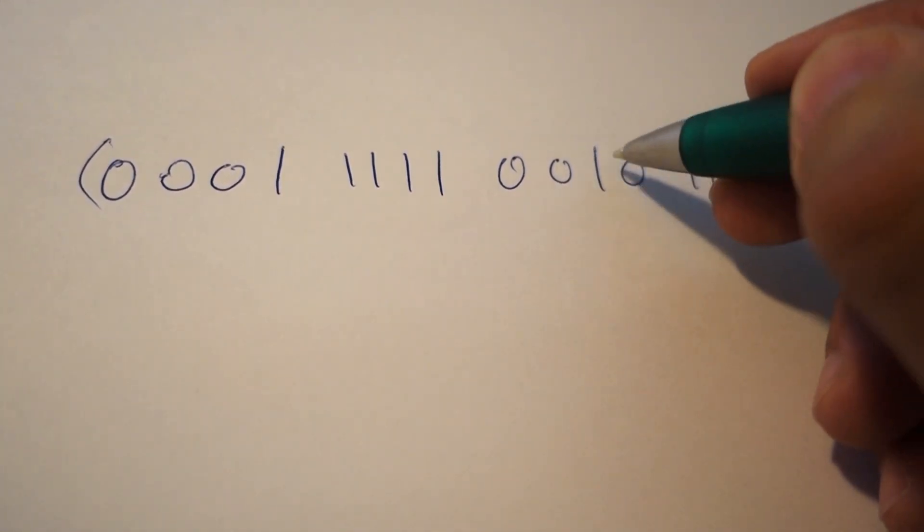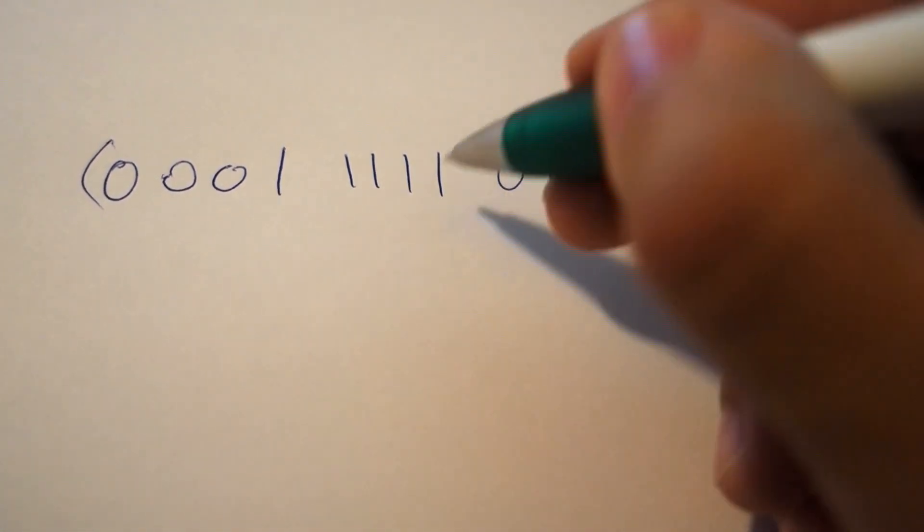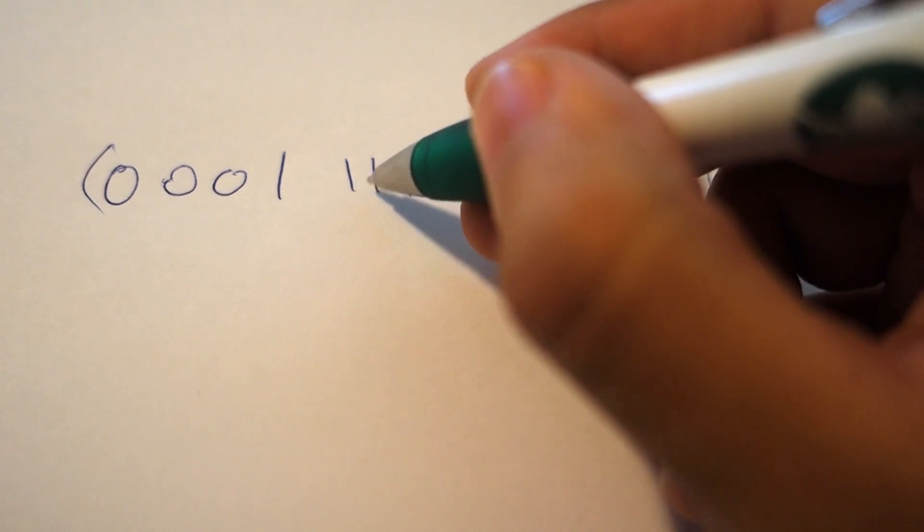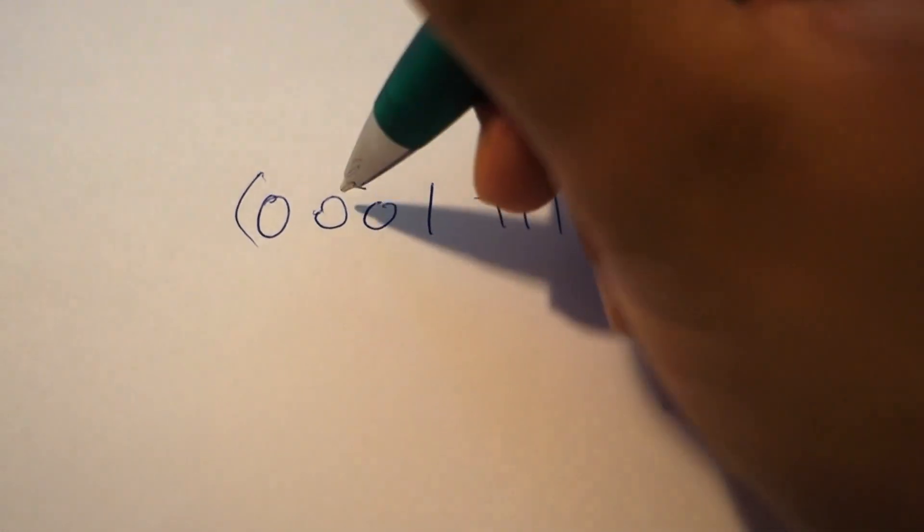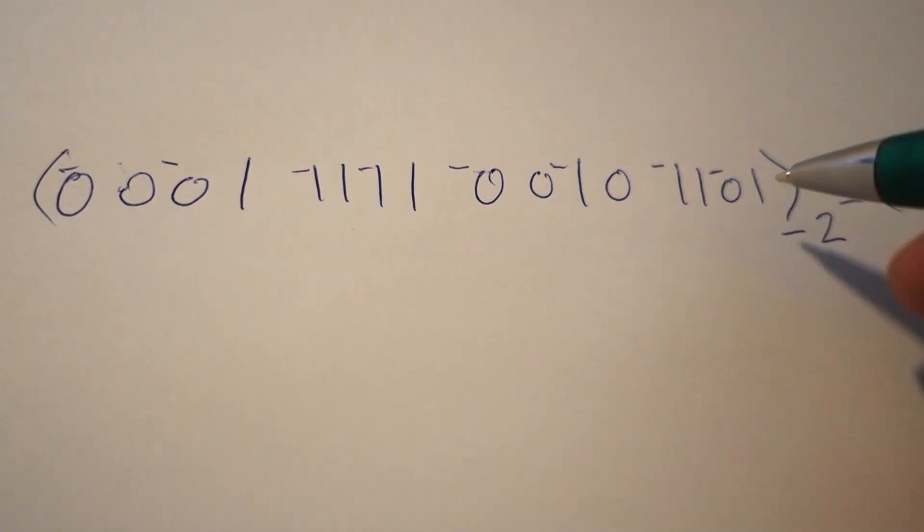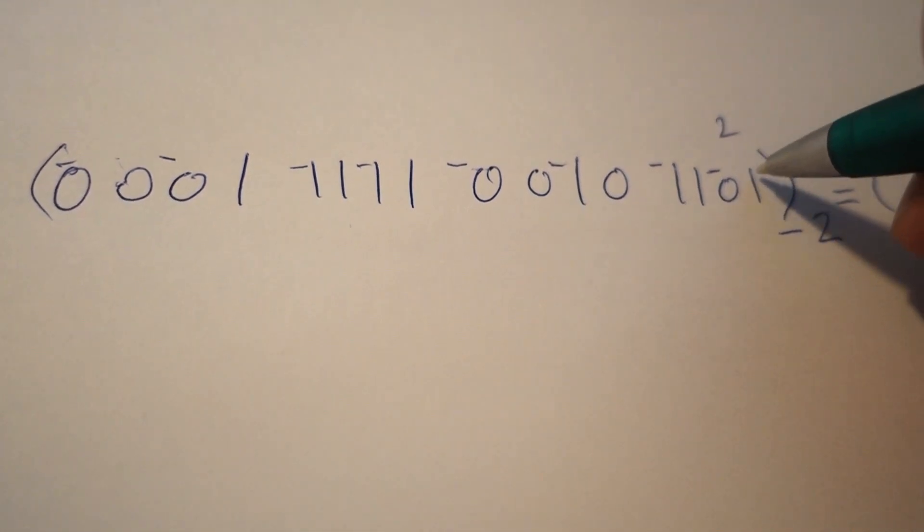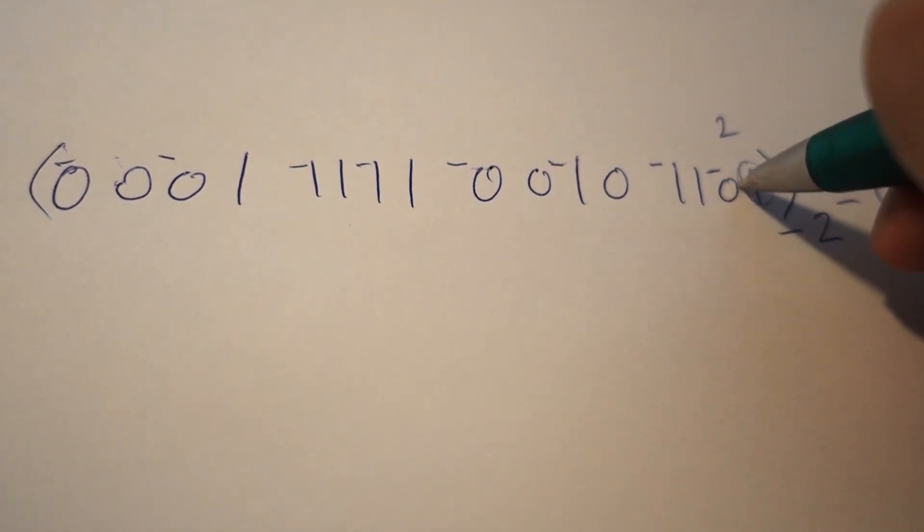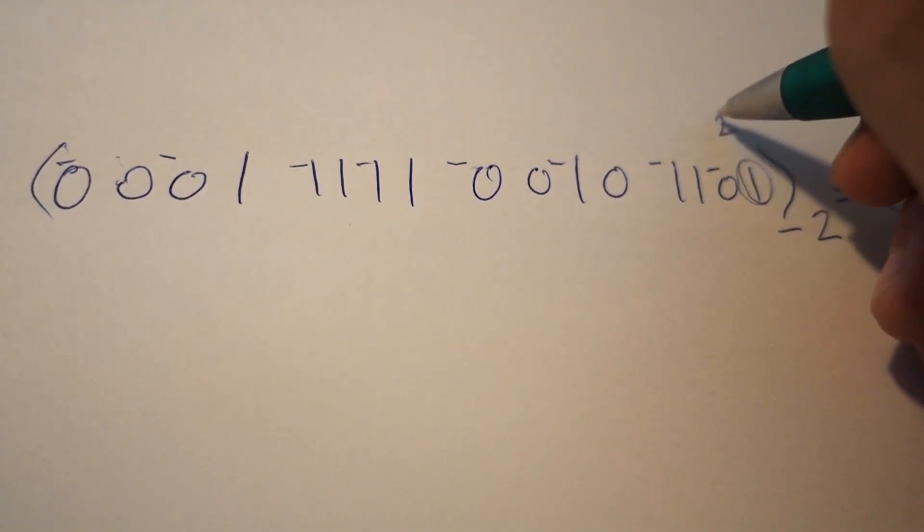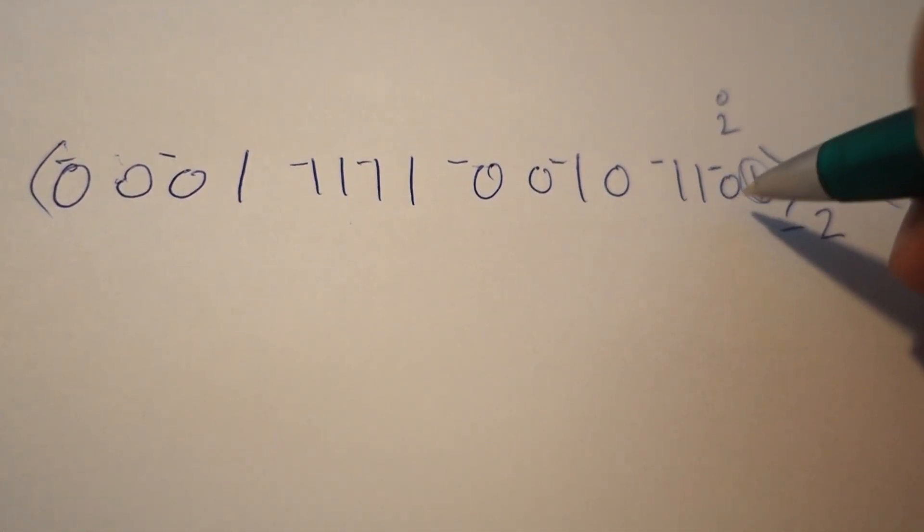Why did I place these negative signs? Every position has a value, and this value is multiplied by whatever the bit is holding. If we have a 1, then we have this value. If we have a 0, then this value is eliminated.